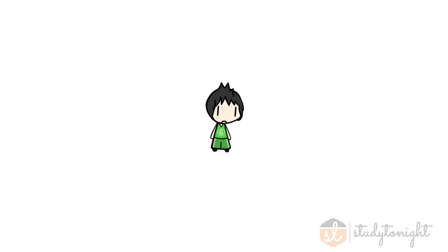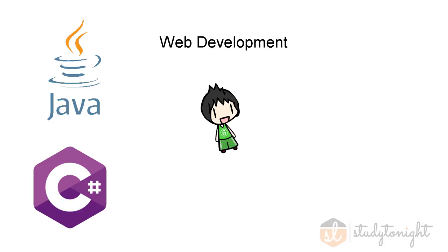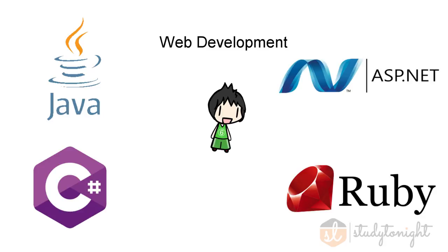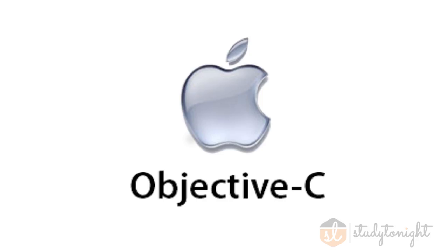So where do we use MVC? MVC finds its most popular use in web development, where you have a clear distinction of where, when, and what you want your end user to see and interact with. Some popular programming languages that implement MVC in their framework include Java, C#, ASP.NET, Ruby, and PHP. It also forms the major backbone of Objective-C, the primary development language for Apple iOS.